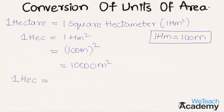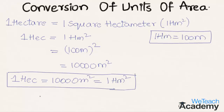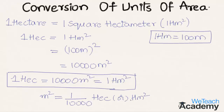That implies we get the result as 10,000 meters square. So we can see that one hectare is equal to 10,000 meters square, which is also equal to one hectometer square. Conversely, one meter square is equal to one by ten thousand hectares or one by ten thousand hectometer square.